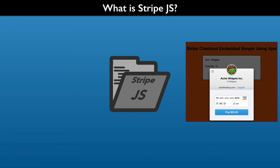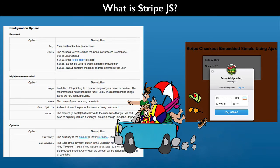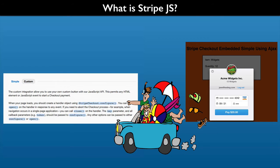StripeJS is the JavaScript library used for the Stripe checkout form. It is the checkout JavaScript file that downloads from Stripe. We will look at how to use it with our own JavaScript. StripeJS provides options to configure the checkout form and we can capture data from the form when it closes. It also provides an easy to use interface of methods that we can call.